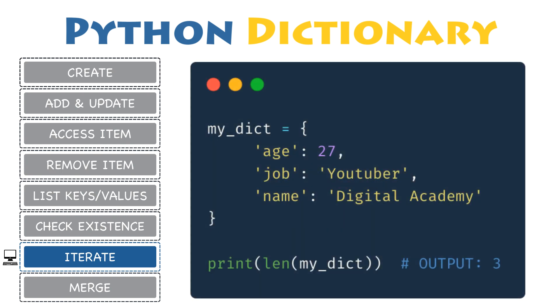Eventually, you may want to find how many key-value pairs a dictionary has. In that case, you do not have to iterate through the dictionary and count each item — just use the len() function, which returns the number of items in a dictionary.